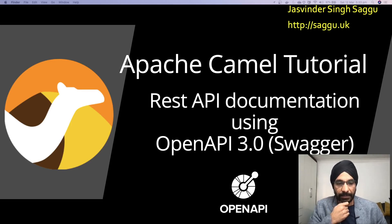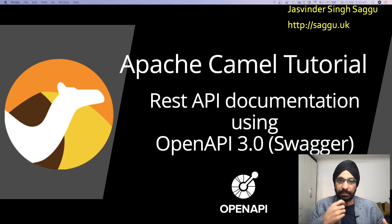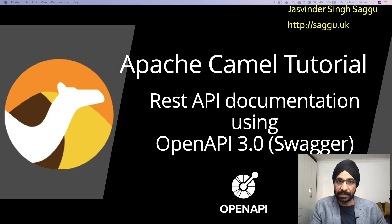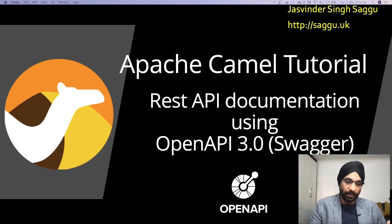So what is the problem we are trying to solve today? Let's say you have REST DSL-based Camel endpoints which are publishing your APIs. One of the problems I faced — even though I've been using Camel for some time — is that I couldn't find an easy way of documenting REST APIs written in REST DSL in Camel.